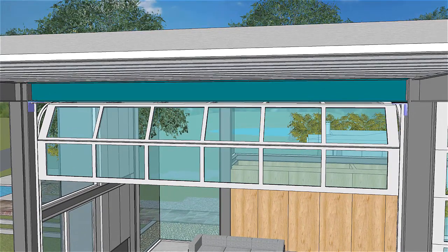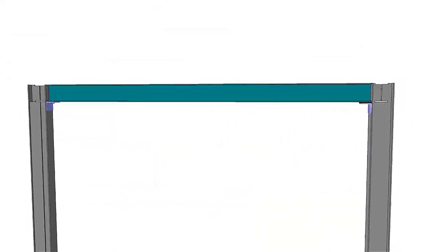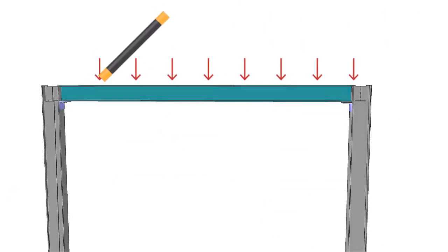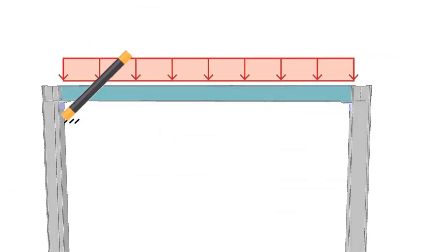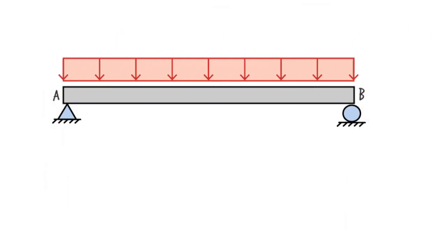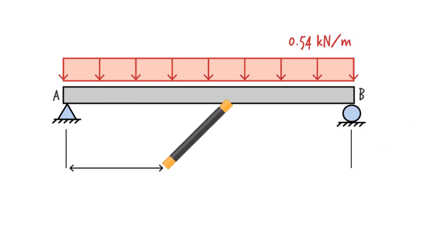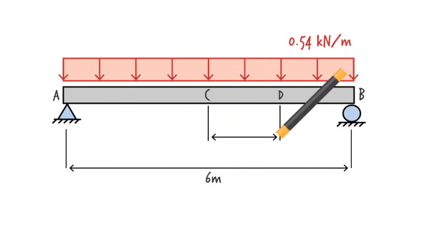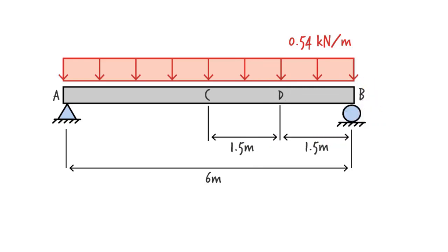The beam supports a part of the roof. We assume the weight of the roof is distributed uniformly over the entire length of the beam. Suppose we have calculated the magnitude of the roof load to be 0.54 kN per meter. The beam's length is 6 meters. We wish to calculate shear and moment at points C and D.